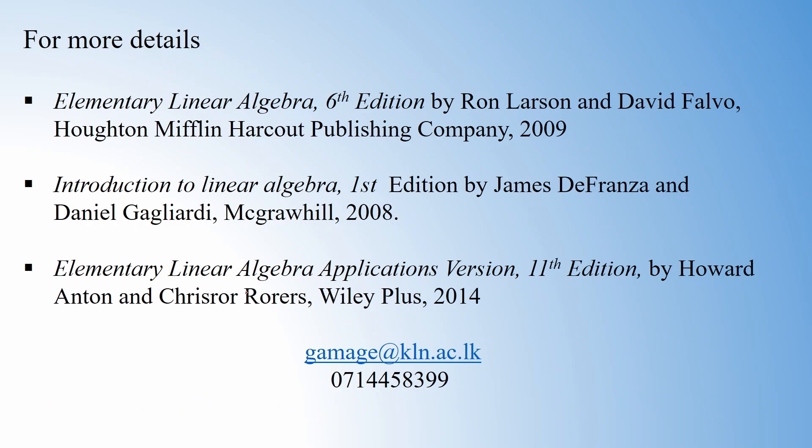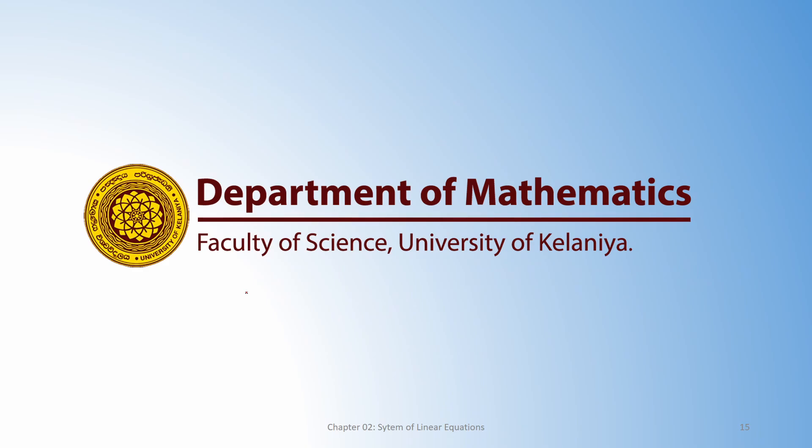What we have discussed today are the elementary row operations — the three main row operations we will use to convert any given matrix into another form. We will discuss a couple of examples in the next few lessons so you can understand how to apply these row operations to a matrix to obtain a new equivalent matrix. Thank you so much for joining with us.